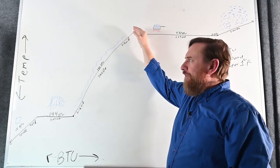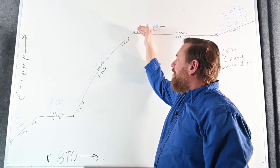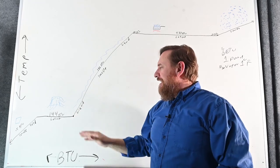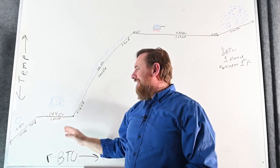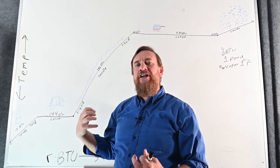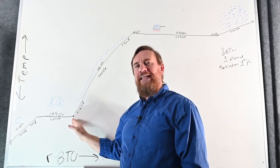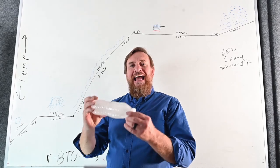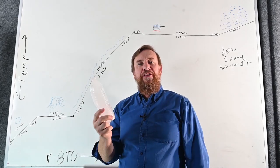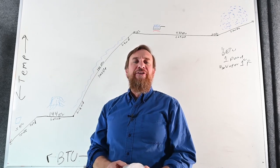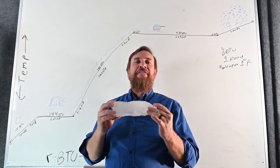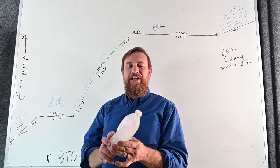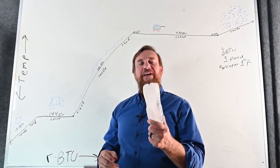Then we can sensibly cool that liquid, removing sensible heat, dropping it from 212°F liquid all the way down to 32°F still liquid. Now we're going to change state from a liquid to a solid, and that's going to take 144 BTUs — we pull out 144 BTUs to make it change state from liquid to solid. After that, this solid is at 32°F. Can we cool it even below 32°F? The answer is yes — we can cool it all the way down to minus 460°F, which is absolute zero.